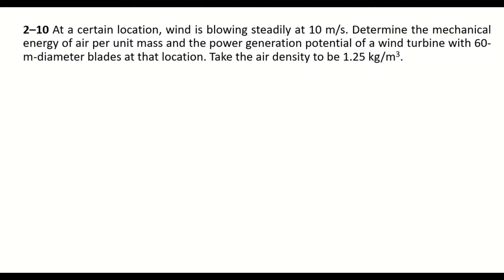Chapter 2, problem number 10. At a certain location, wind is blowing steadily at 10 meters per second. Determine the mechanical energy of air per unit mass and the power generation potential of a wind turbine with 60 meters diameter blades at that location. Take the air density to be 1.25 kilogram per cubic meter.